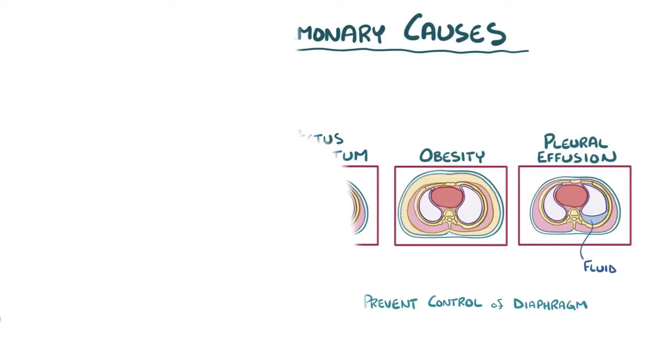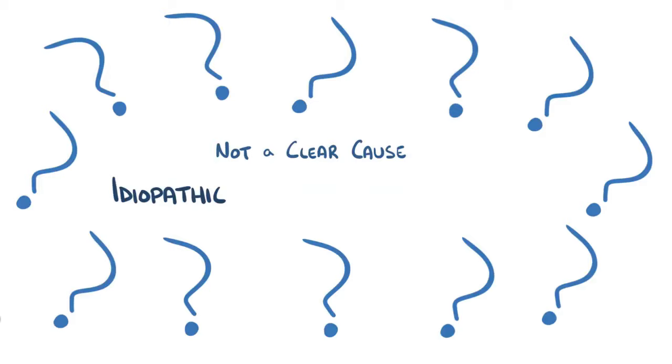Finally, a catch-all for any type of restrictive lung disease which doesn't have a clear cause is called idiopathic restrictive lung disease.